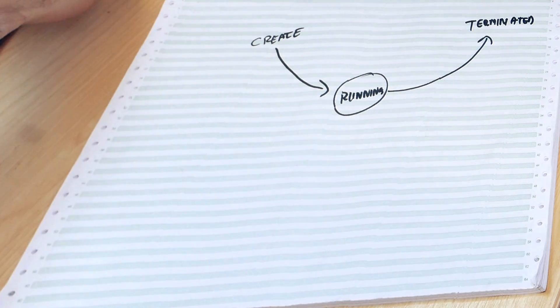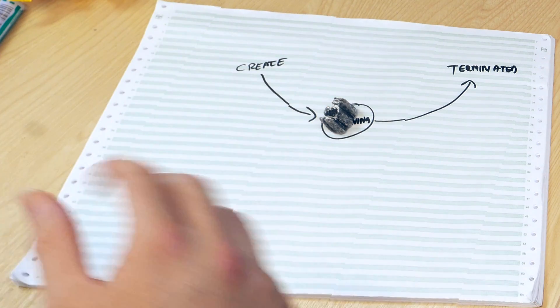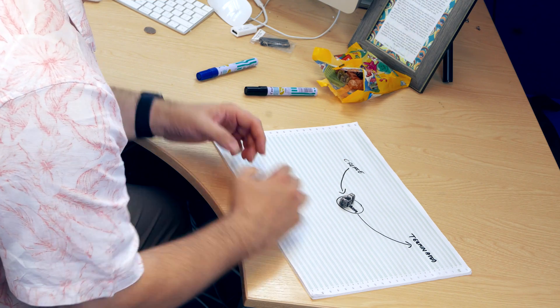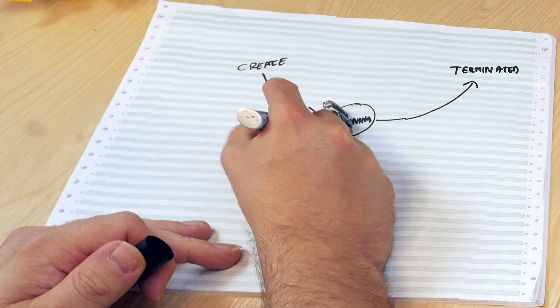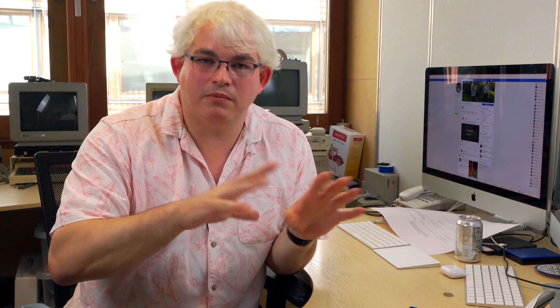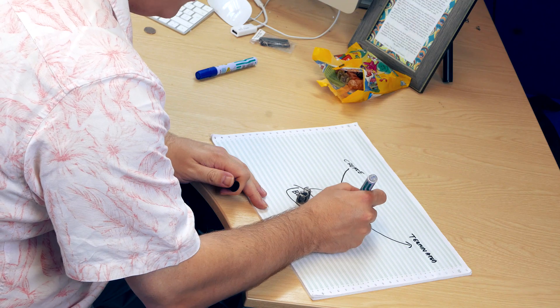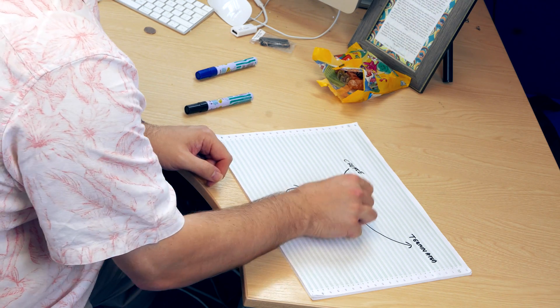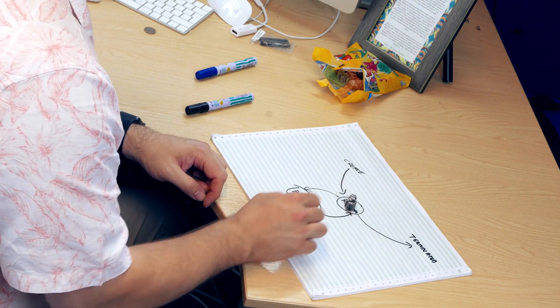Eventually the process is terminated, so we can start to see how this works. The process gets created by the operating system, then starts running on the CPU and calculating things. At some point this process is going to want to interact with the rest of the world — it'll call the operating system to do something. We model that with another state called 'blocked'. The process transfers from running to blocked, meaning it's still active but can't run because it's waiting for something — data to print, a network packet, whatever it is. Eventually it goes back to the running state, then blocked again waiting for a key press, then running again, until eventually it gets terminated.